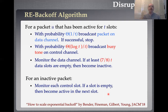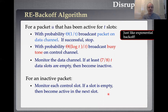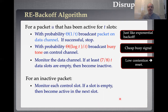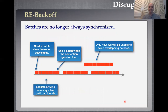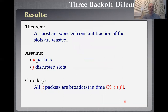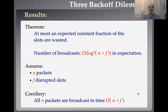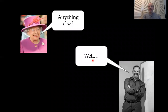We were very excited by this because this actually solves the three backoff dilemmas. It uses a cheap busy signal — so not too many attempts. It has a low-contention reset to make sure we don't waste too much time. And it has batch synchronization to ensure constant throughput. The key results: we get at most a constant fraction of slots wasted. If we have N packets and f disrupted slots, all N packets finish in time order N + f. The number of broadcast attempts will be something like log² of (N + f).